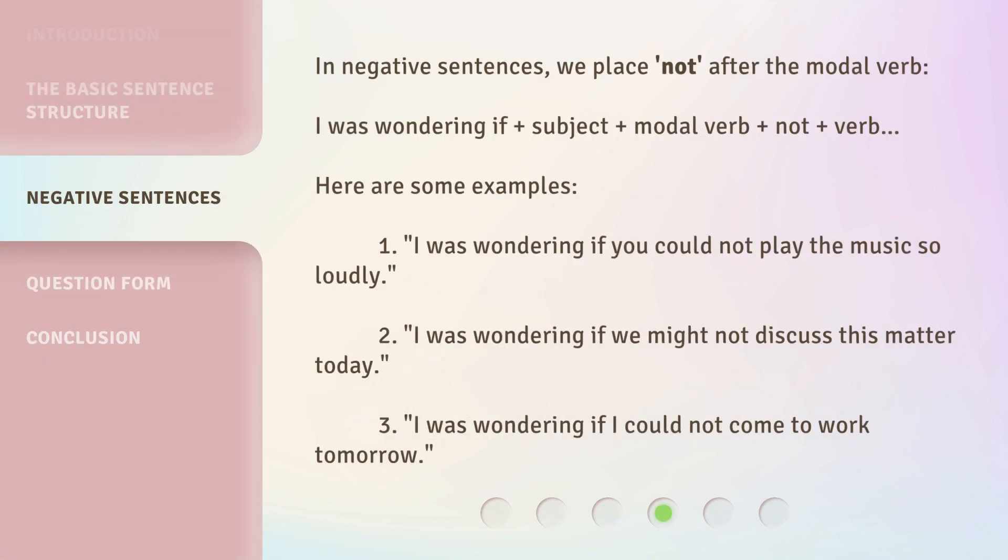In negative sentences, we place 'not' after the modal verb. I was wondering if plus subject plus modal verb plus not plus verb. Here are some examples. 1. I was wondering if you could not play the music so loudly. 2. I was wondering if we might not discuss this matter today. 3. I was wondering if I could not come to work tomorrow.